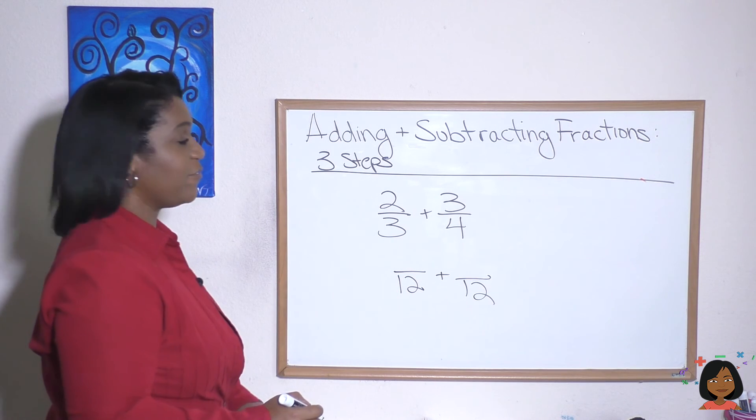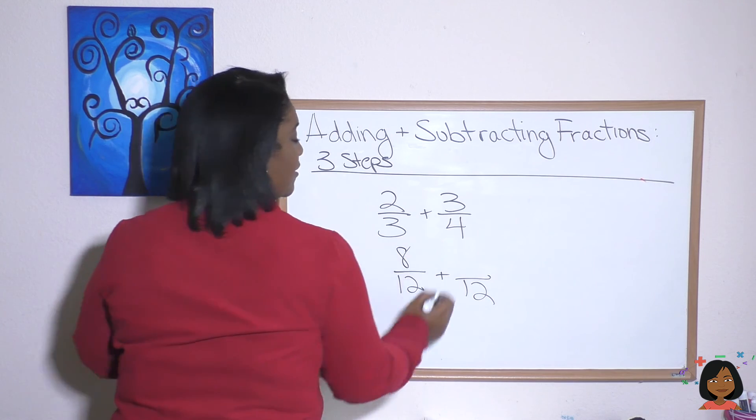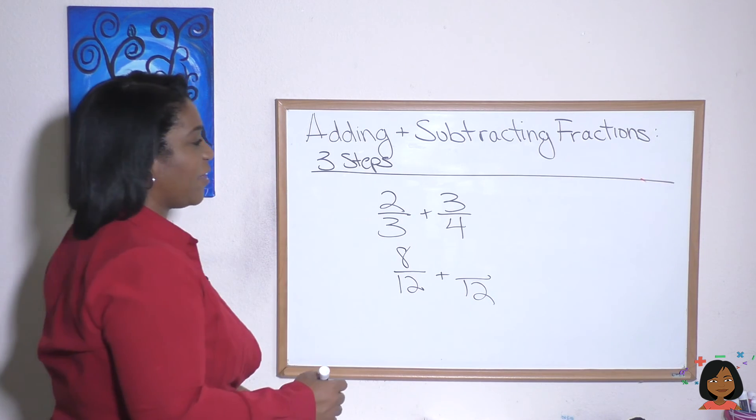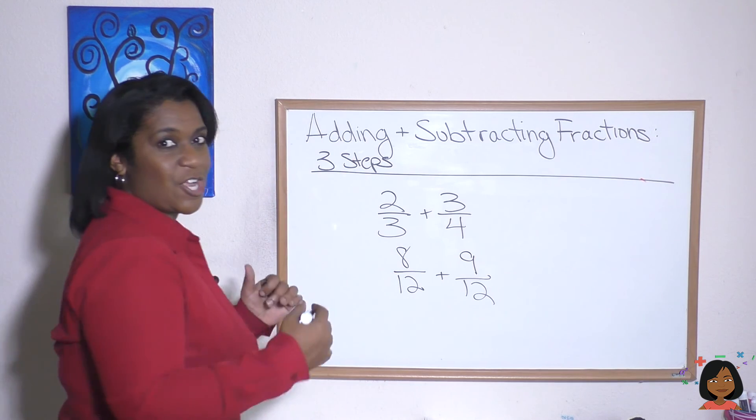Three times four is twelve. Two times four is eight. Four times three is twelve. Three times three is nine. Great.